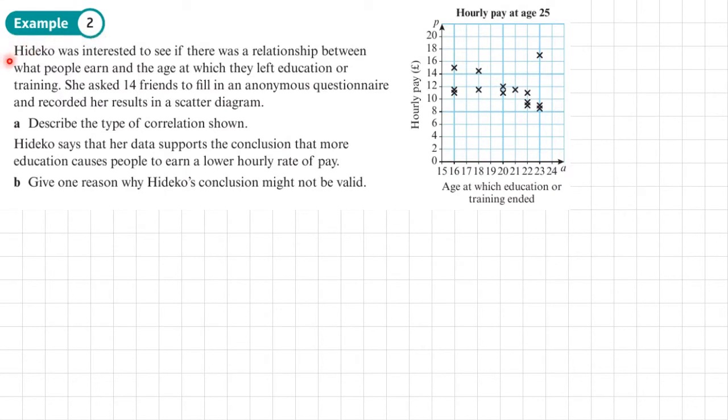Example 2. Hideko was interested to see if there was a relationship between what people earn and the age at which they left education or training. She asked 14 friends to fill in an anonymous questionnaire and recorded the results in the scatter diagram. You can see them here. We have the age at which they left education or which their training ended and what their pay is.